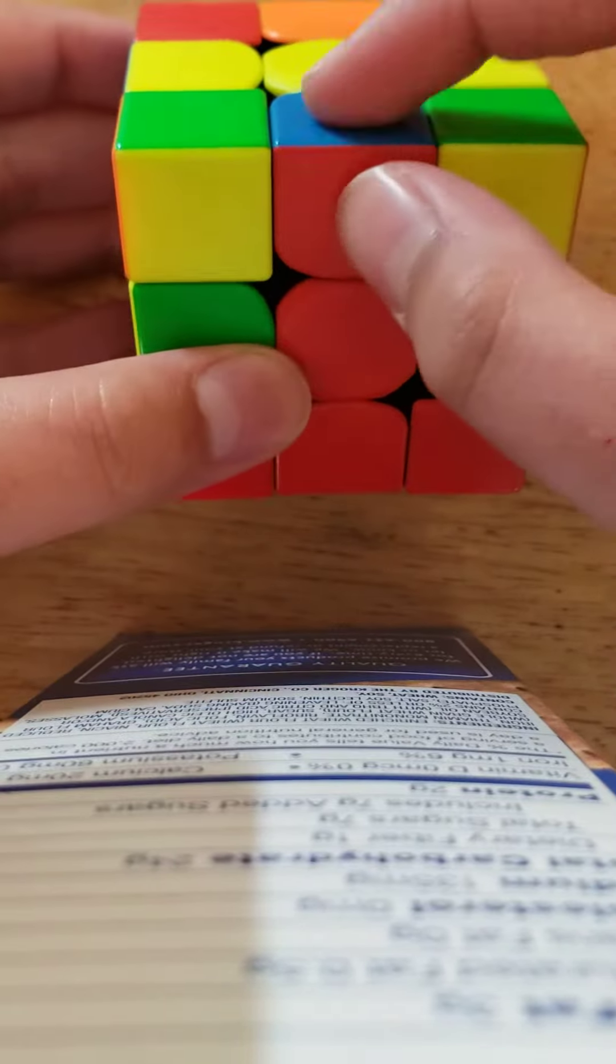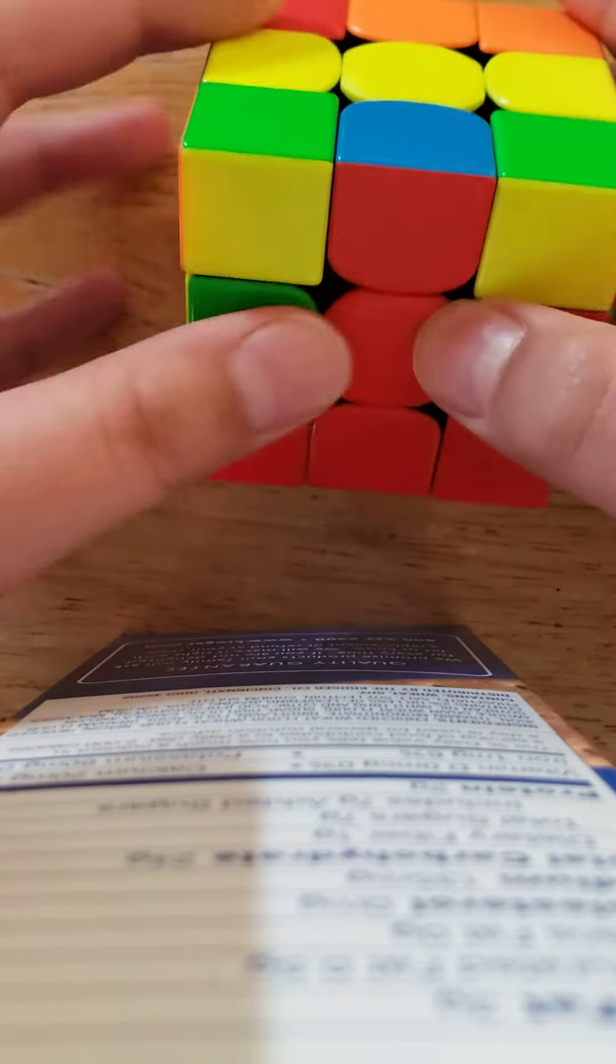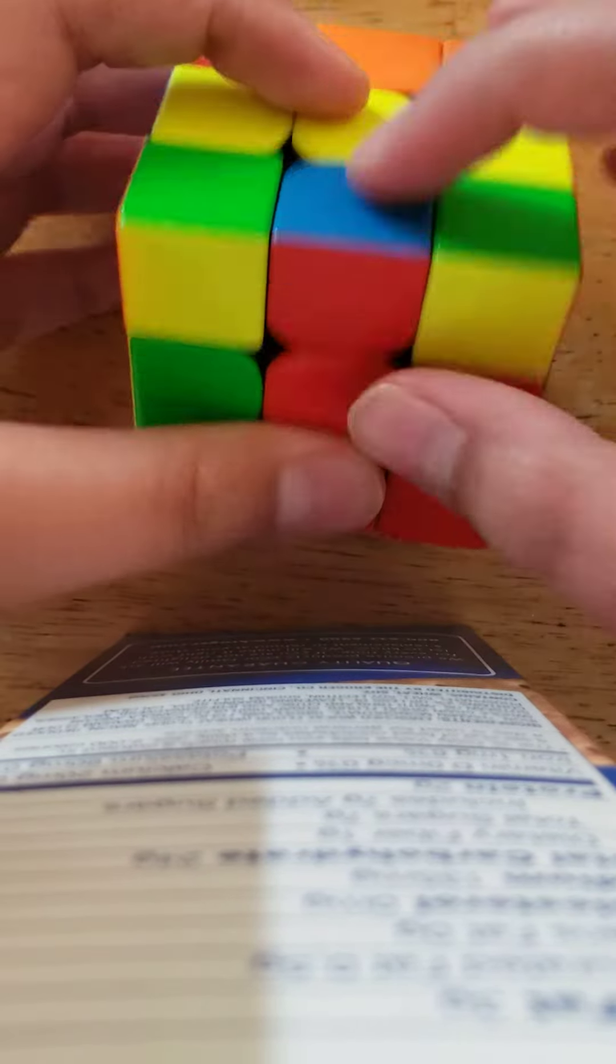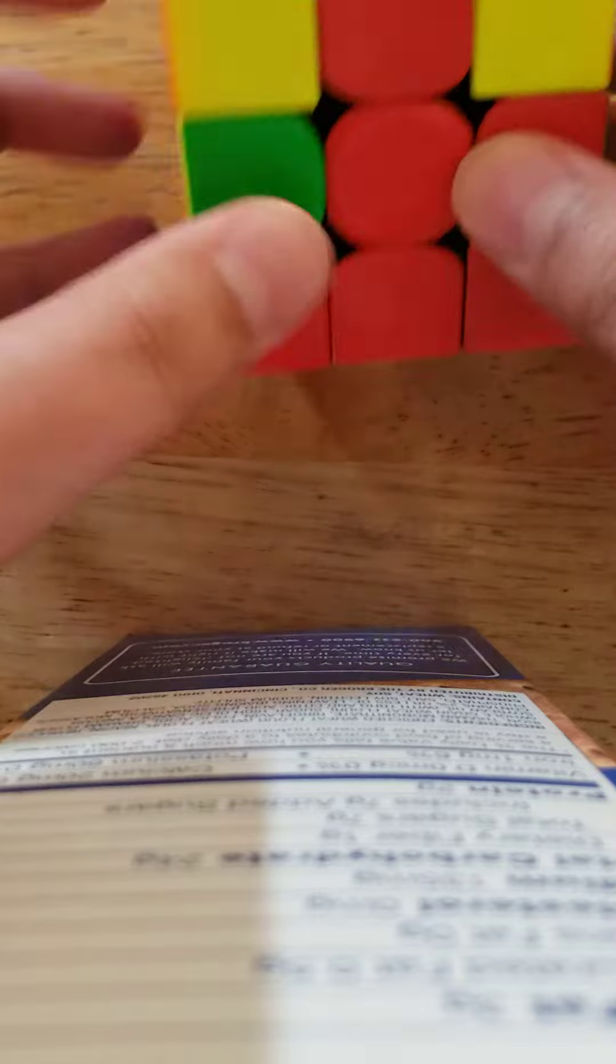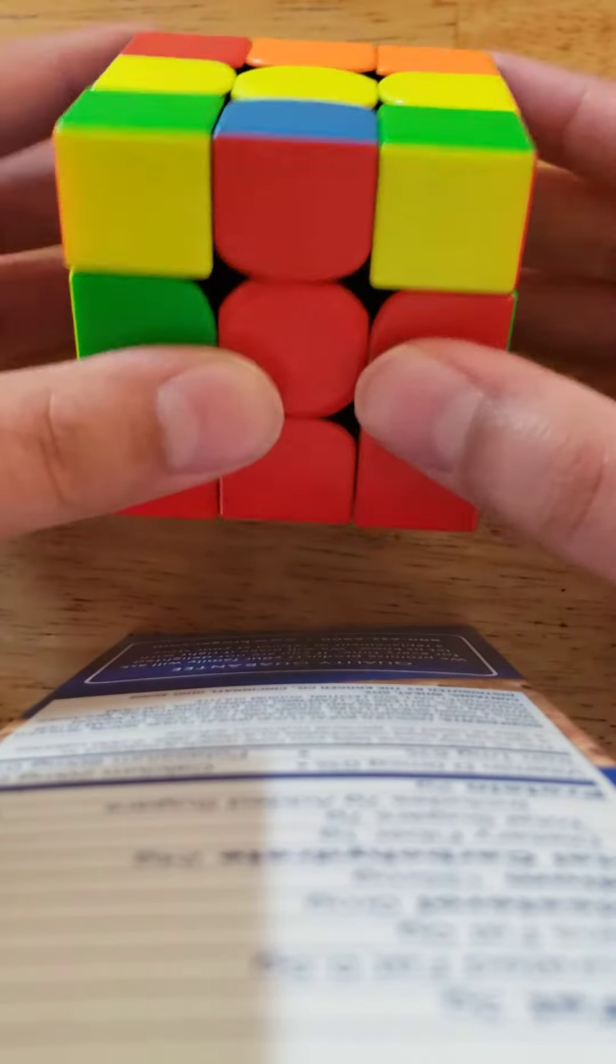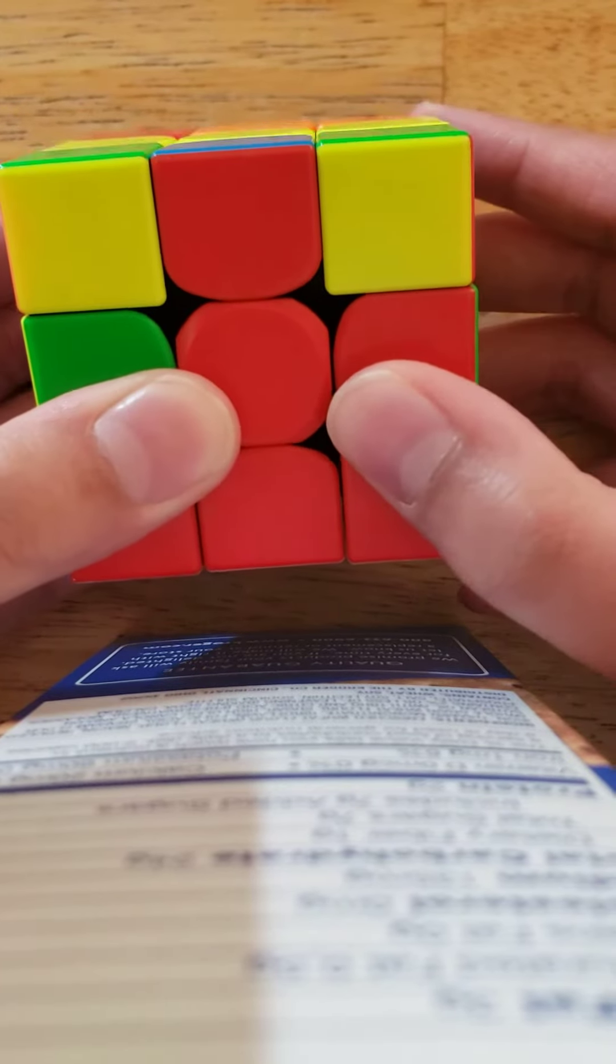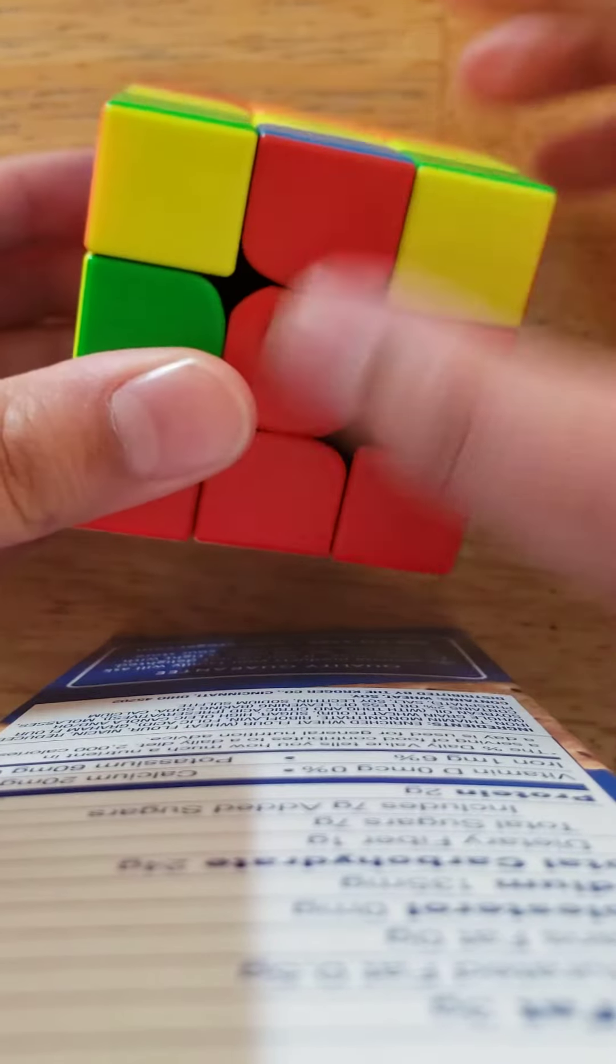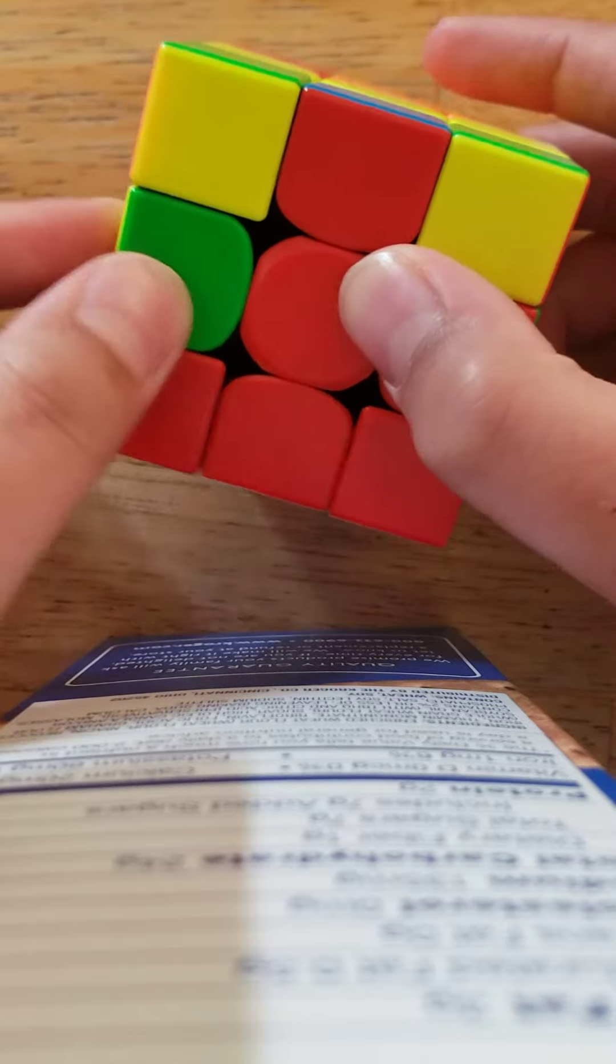So now we have this lined up again, but blue's over here, it's not over here. We need to do a different algorithm. And when it's lined up and we need to insert it on the left,